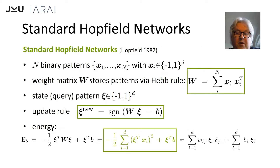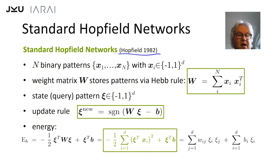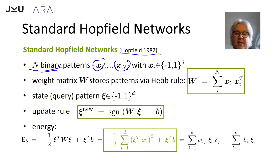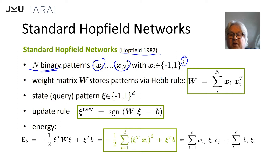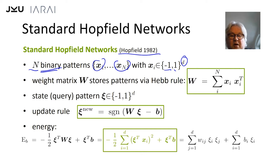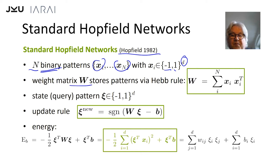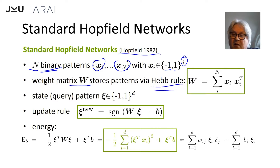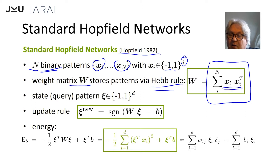The standard Hopfield network according to Hopfield 1982: we have N binary patterns x_1 to x_N, and each of the patterns is a d-dimensional vector. The components of the vector are either minus one or plus one. These patterns are stored in a weight matrix W, and the storage is done via a Hebbian rule — you just do the sum of outer products of the patterns.